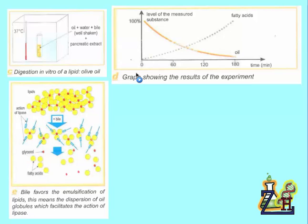If we go back to the graph, we can say that the oil or the lipids in the oil were decomposed and transformed into fatty acids mainly and, of course, into glycerol.